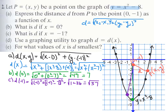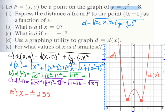Part d asks us to use a graphing calculator to graph the function and find the x-values where d is minimized. Using Desmos, the function is the square root of x squared plus (x squared minus 7) quantity squared. There are two minimum points — a positive and a negative — found to be approximately plus or minus 2.55. Desmos only goes to two decimal places, but on your graphing calculator always go to three decimal places.